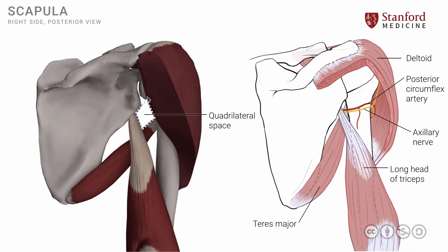Additionally, there are two other spaces that are triangular in shape, and hence they are called triangular spaces. There is a medial one and a lateral one. The medial triangular space is adjacent to the scapula, whereas the lateral triangular space is adjacent to the shaft of the humerus. These triangular spaces also have neurovascular structures that emanate out of them, and we will look at the exact structures coming out from the triangular spaces in a future lesson.